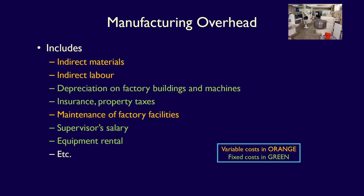Other overhead costs are fixed: depreciation on the factory building and machines, insurance and property taxes, supervisor salary, equipment rental. Regardless of the level of activity, it is likely that these costs are fixed — at least within the relevant range.